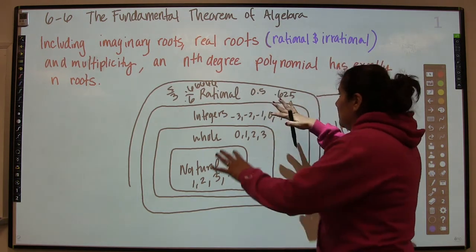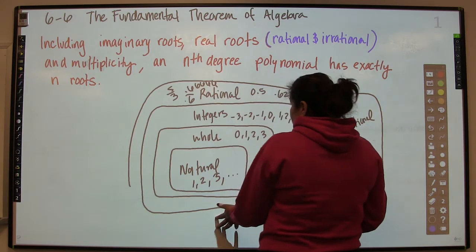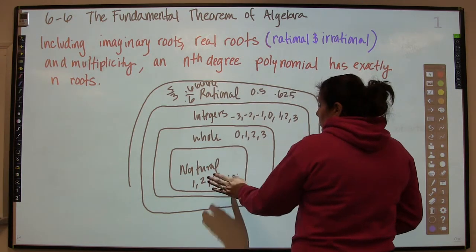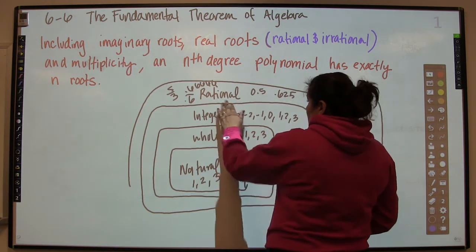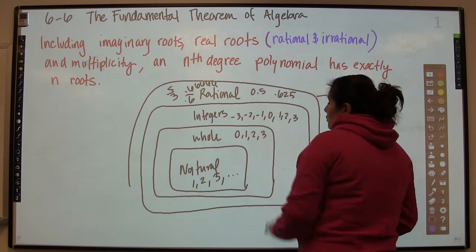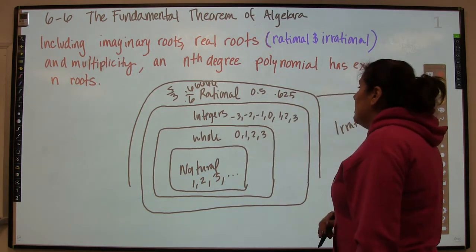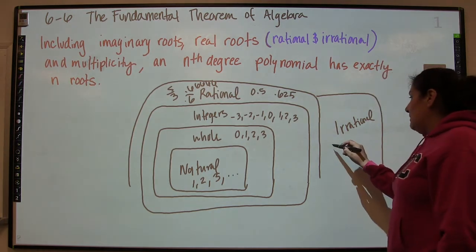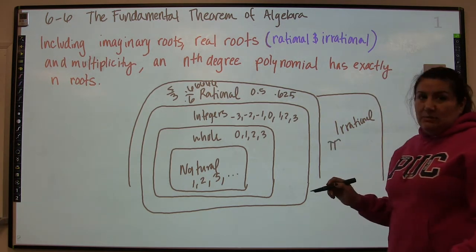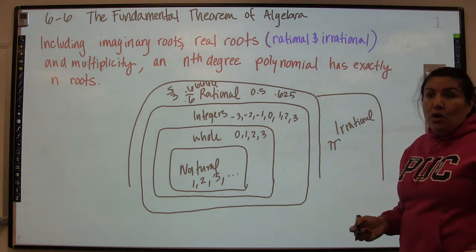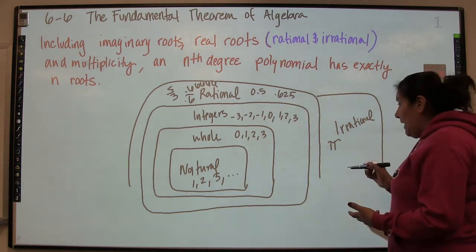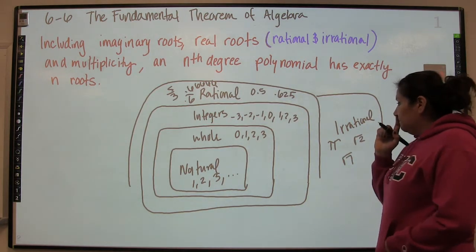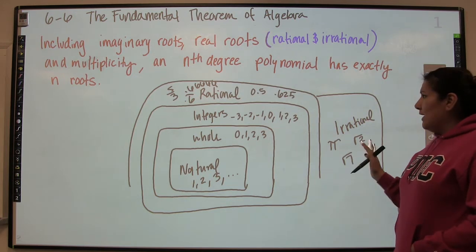So fractions and decimals that either have a pattern or terminate are in the rational list. This is a big section of our numbers — all natural numbers, whole numbers, and integers are considered rational. And then you have the irrationals. Those are decimals that have no pattern — things like pi, the square root of 2, the square root of 7 are irrational.